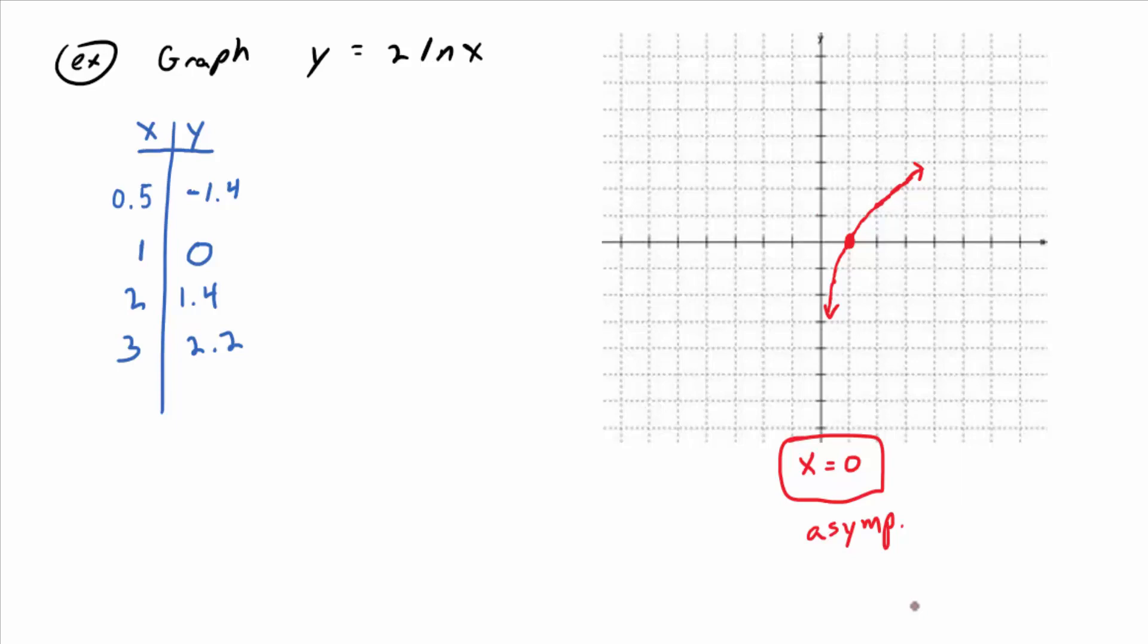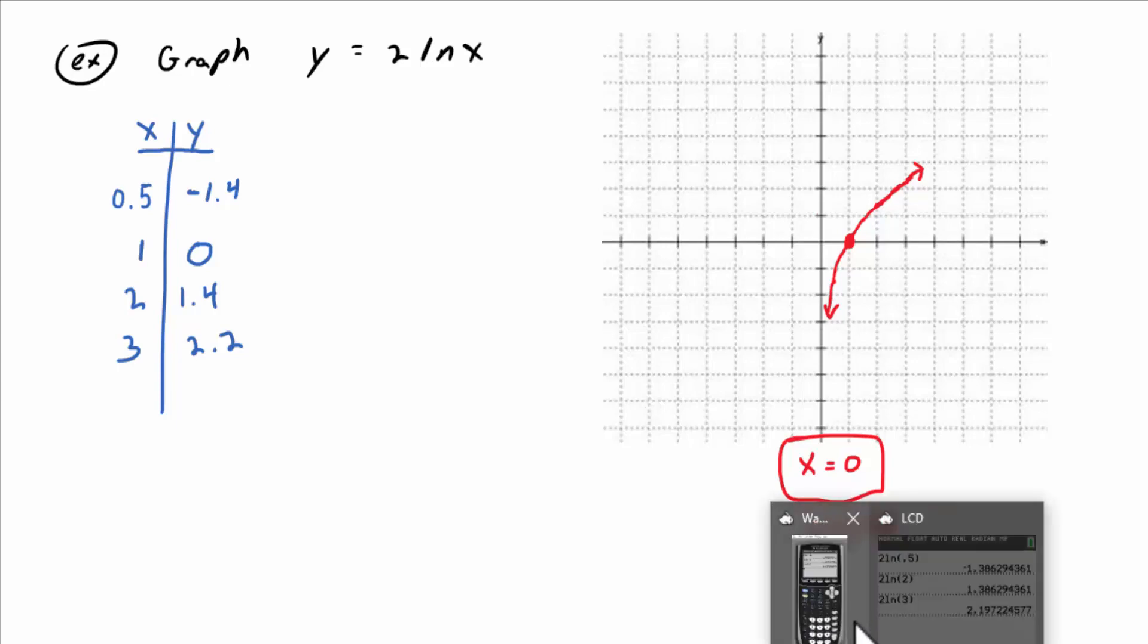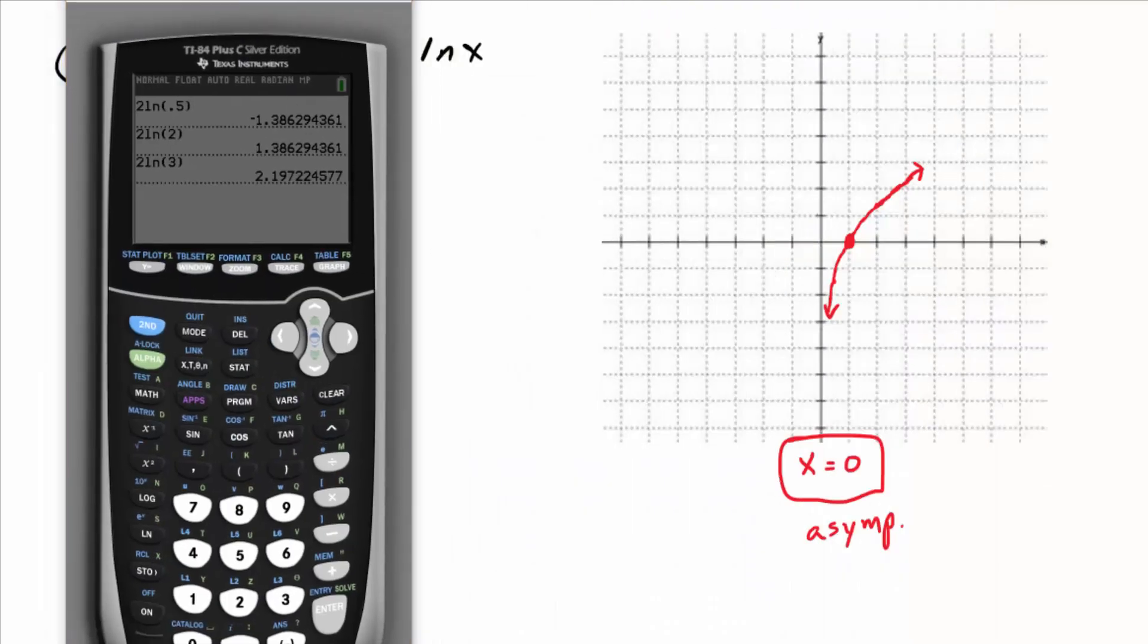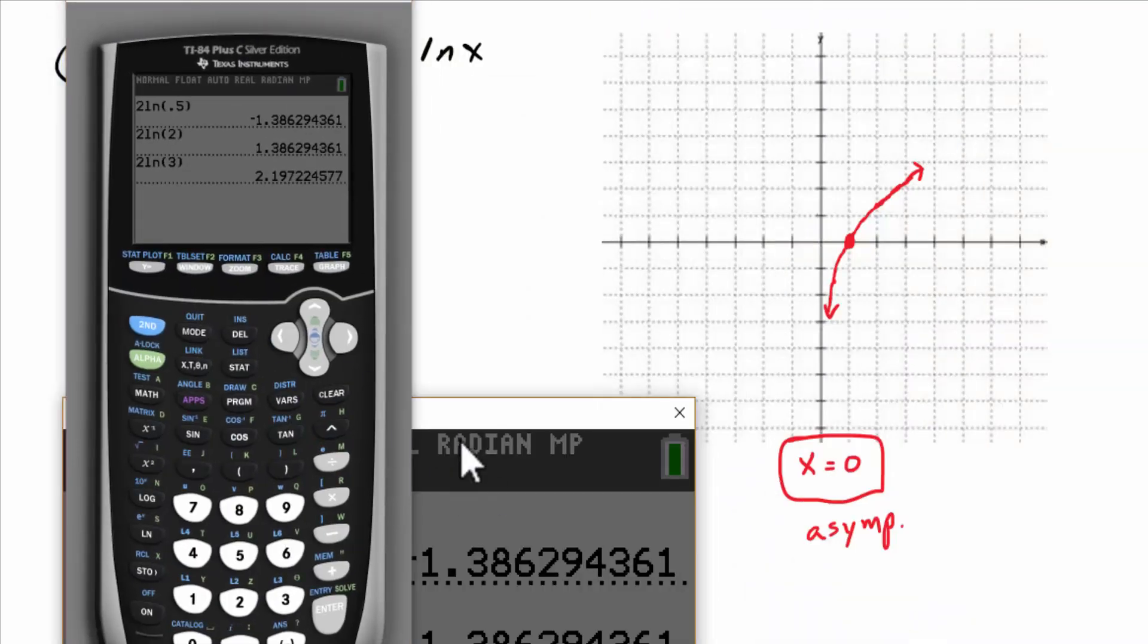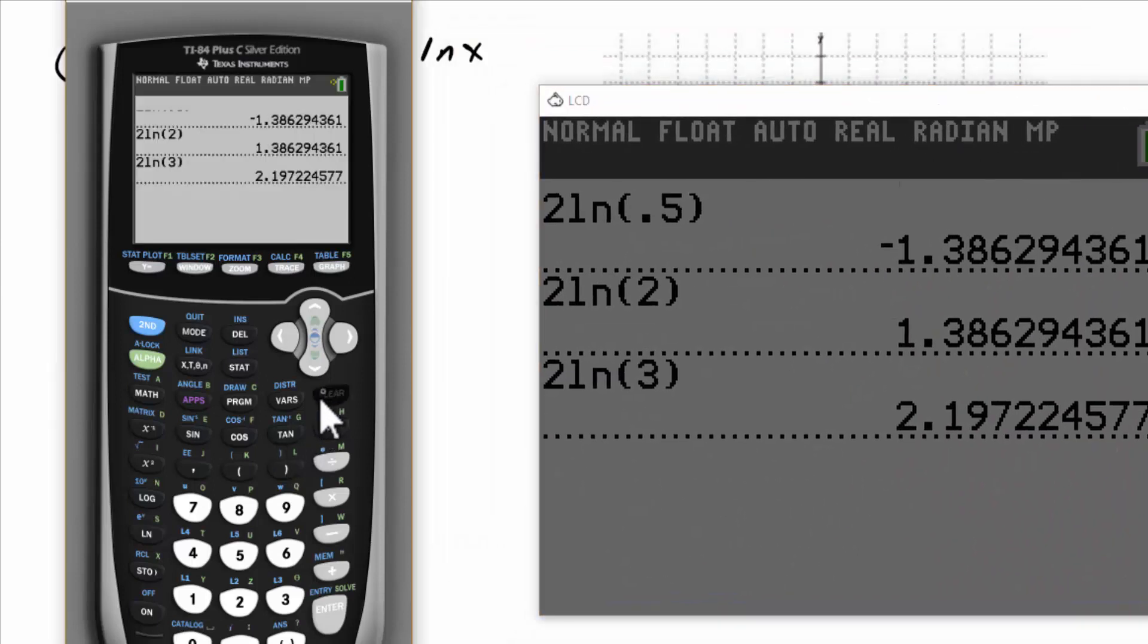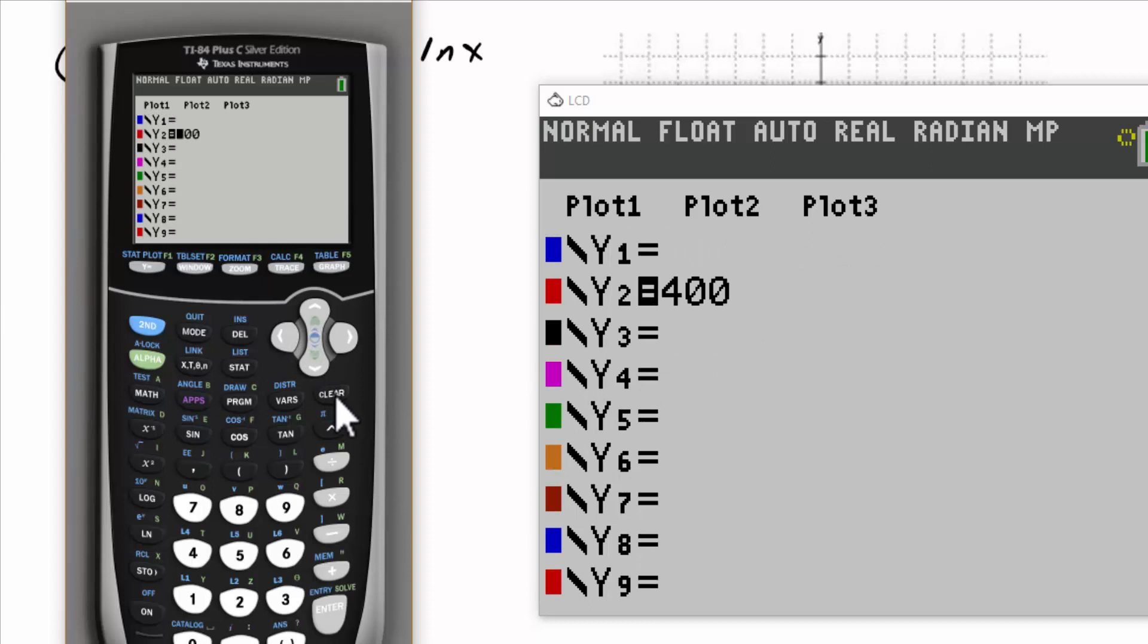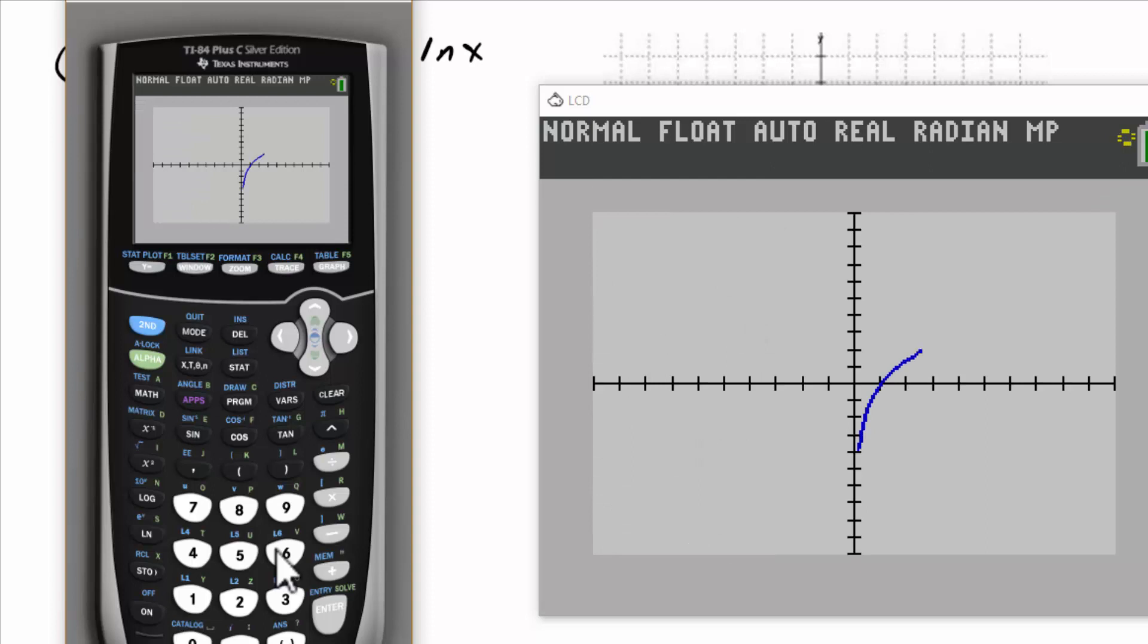Of course, your calculator is better at graphing it than you are. So what you could do to get a picture on your calculator, you can go to y equals, erase what's there. And then 2lnx, let's graph it in a standard screen, zoom number 6. And okay, basically the same picture.